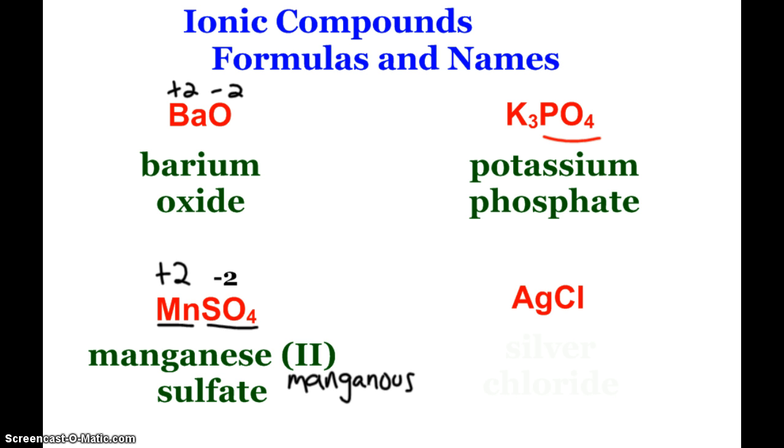And then we have AgCl. Well, of course, chemistry is the wonderful world of exceptions. So Ag is silver, Cl is chloride. Silver however is a transition metal, but we traditionally know and recognize that silver only forms a plus 1 charge ion. And so this is simply known as silver chloride. You don't need to differentiate with a Roman numeral, because chemists know that silver will traditionally only form a plus 1 ion. I hope this refresher helps, and I wish you luck on your quick check on chemical formulas and names. Later.